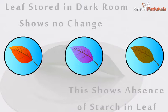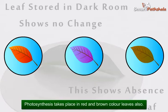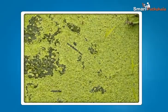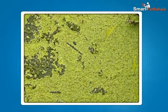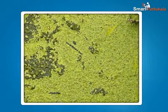And the answer is yes. The leaves other than green also have chlorophyll. The large amount of red, brown and other pigments mask the green color. Photosynthesis takes place in these leaves also. We all might have observed slimy green patches in ponds or in other stagnant water bodies.